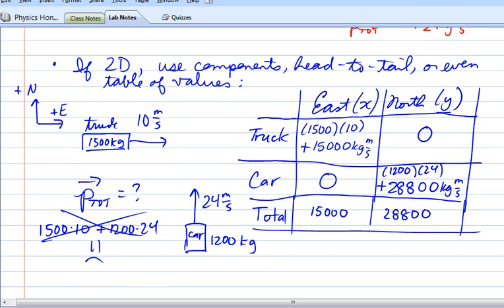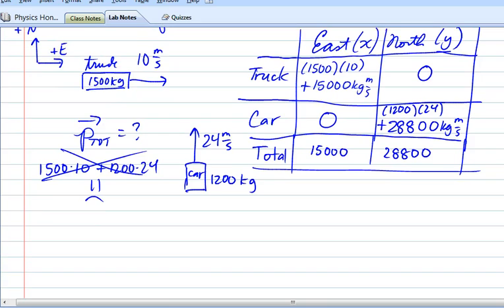This gives me a total in the east direction of 15,000 and in the north direction of 28,800. Now try to remember what we did with force vectors when we had totals like this—we made a new triangle. So now I'm going to make a new triangle. If you want, you can think of this as P_tot in the x-direction and P_tot in the y-direction.